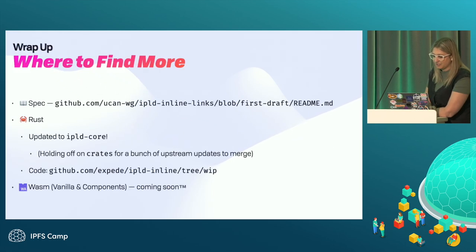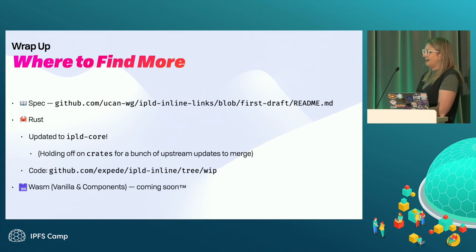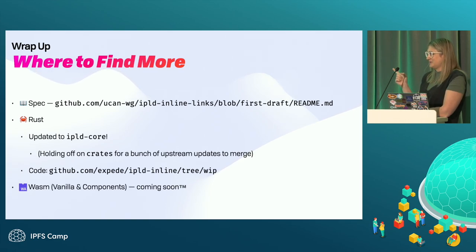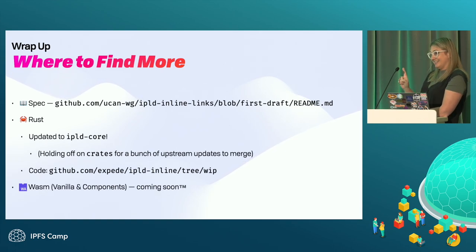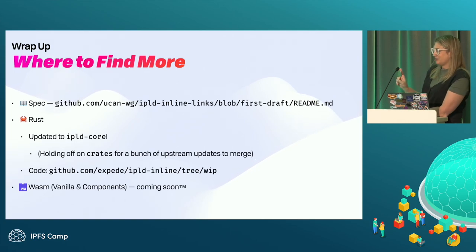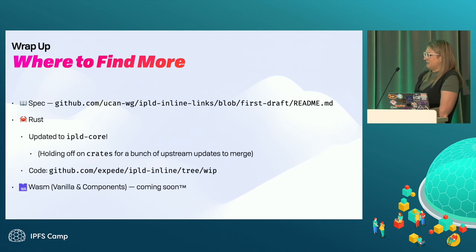That's basically it. Where to find more: we wrote a spec. There's a Rust implementation with WASM coming soon. The Rust implementation was written over a couple of days. It worked with libipld, then I updated it to IPLD core — which is awesome — but it's missing a couple things I've now upstreamed into about six libraries. I'm waiting for those to merge before publishing to crates. You can get the code at github.com/xpeed/inlineipld/tree/work-in-progress.